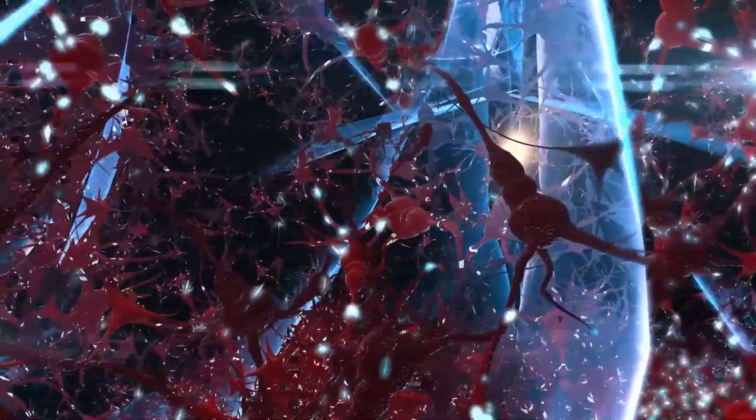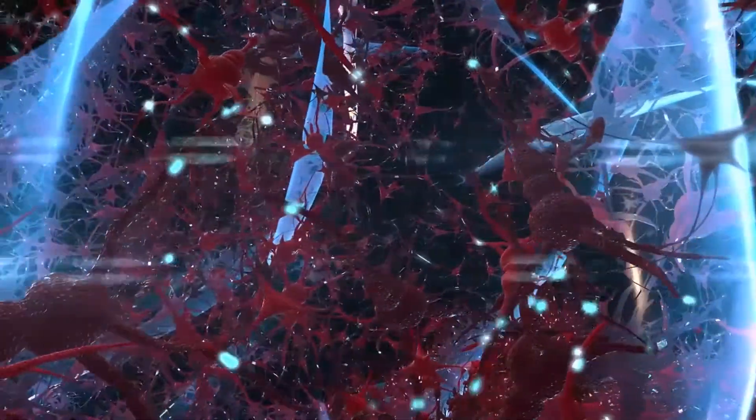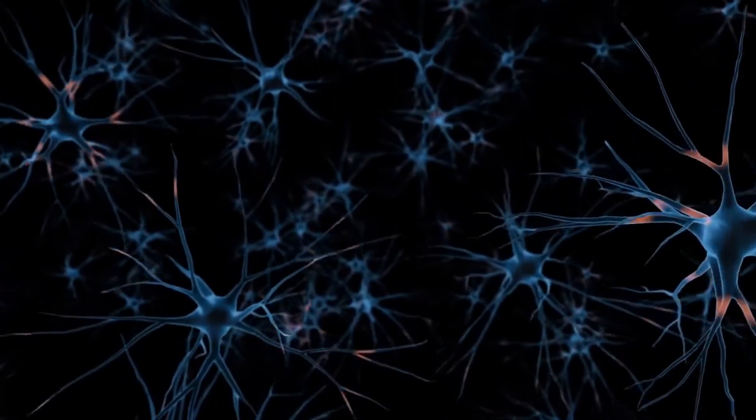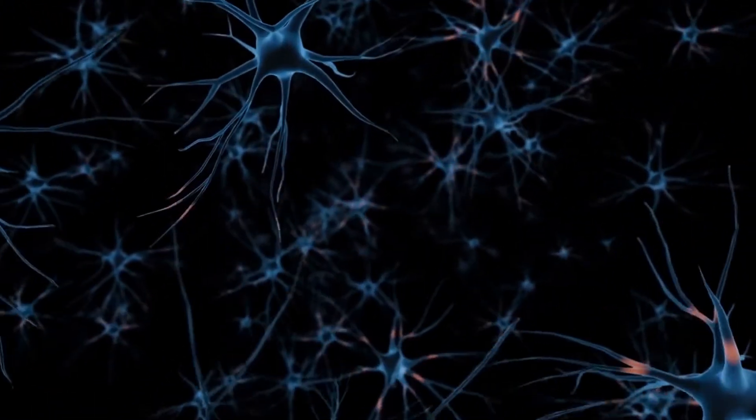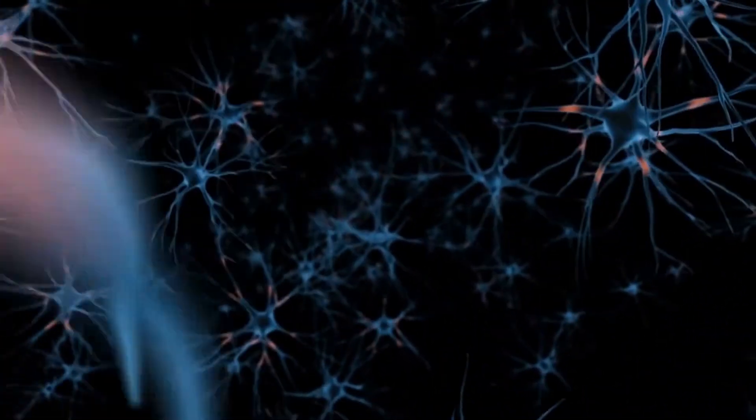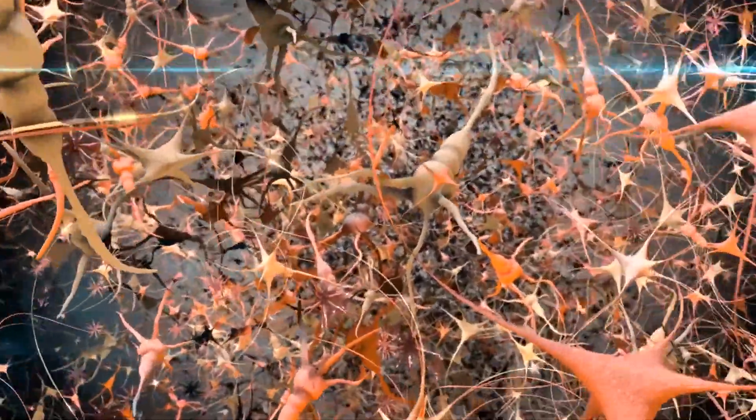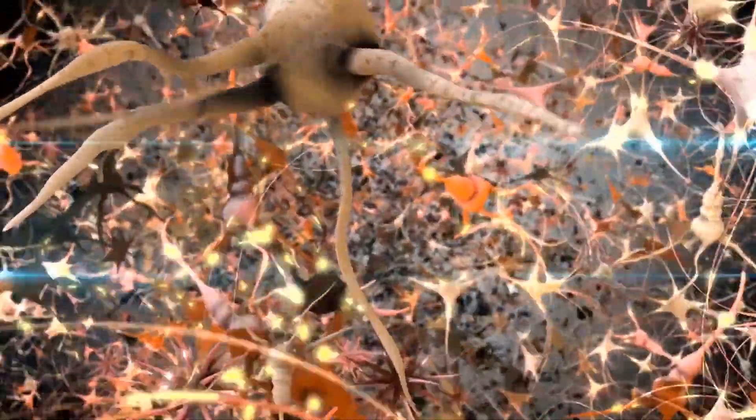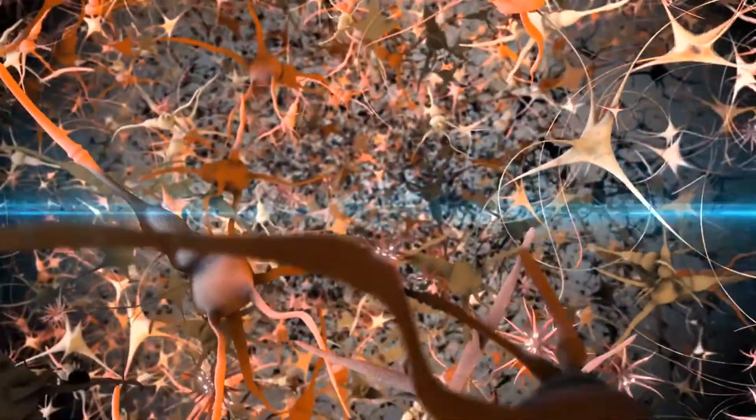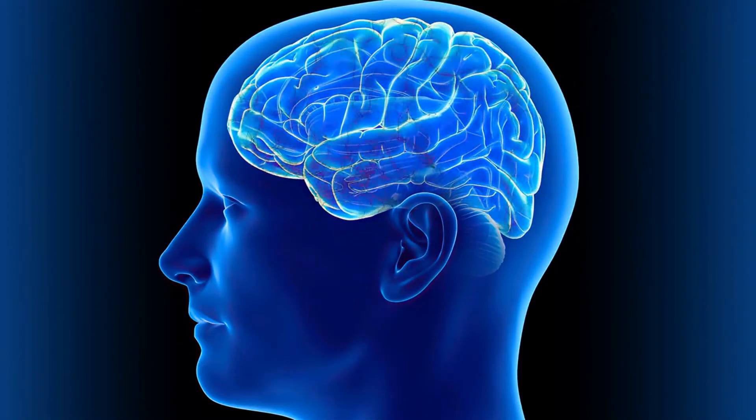Now comes the crucial question. How many neurons do you have inside your brain? According to reports, the average human brain contains 86 billion neurons. These neurons make different combinations to make different memories. We have already answered how much data 86 billion neurons can store.